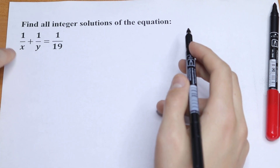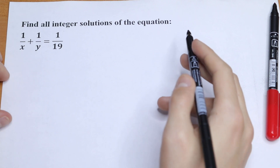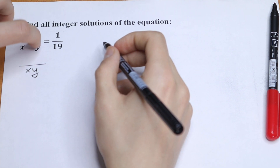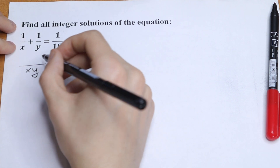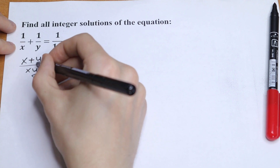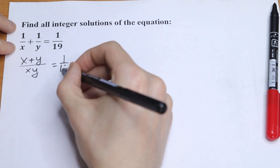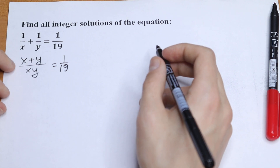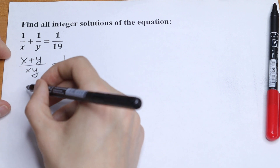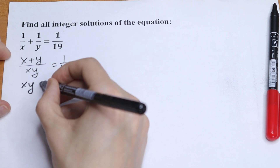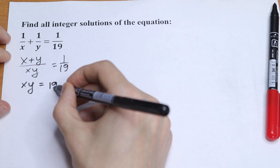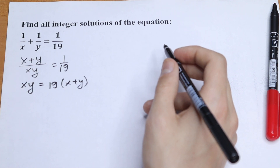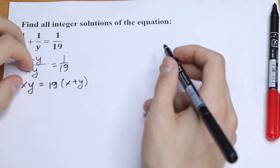Let's simplify this a little bit. Let's find our x times y. We will have x times y in our denominator and x plus y in the numerator. This is a really good case to use cross multiplying. As a result we will have that xy is equal to 19 times x plus y.